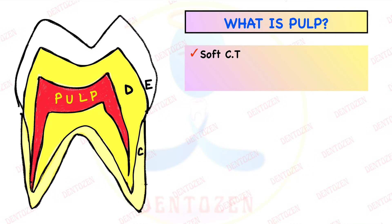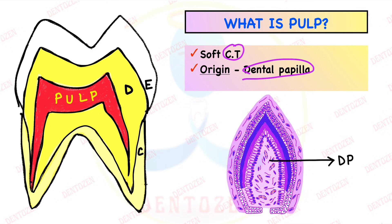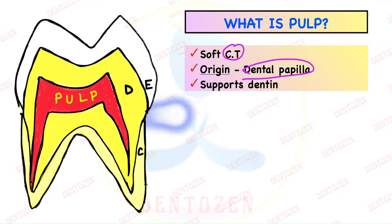What is pulp? It is soft connective tissue. Its origin is from dental papilla. As we have seen during tooth development, dental papilla can give rise to D for dentin and P for pulp. This pulp has beautiful odontoblast cells, which form dentin. So pulp has an important role to support dentin.